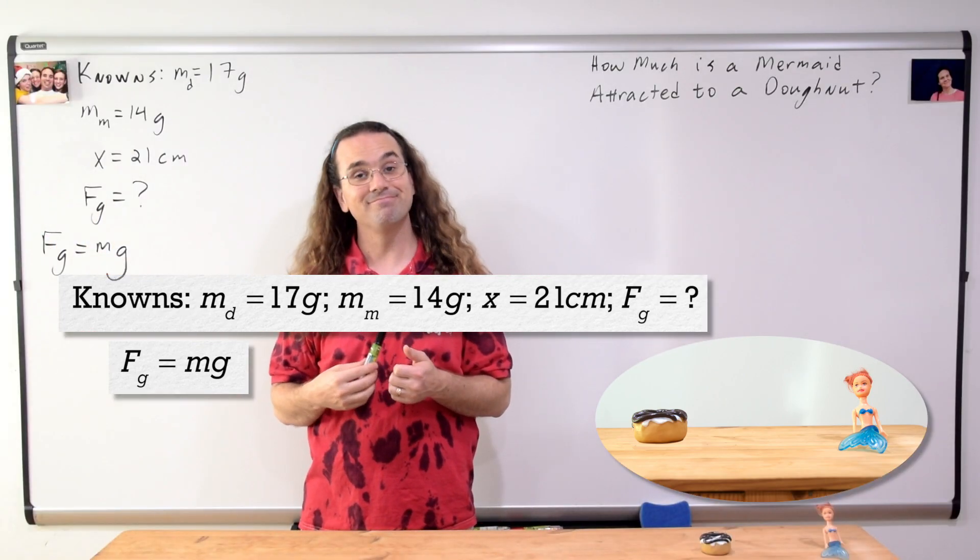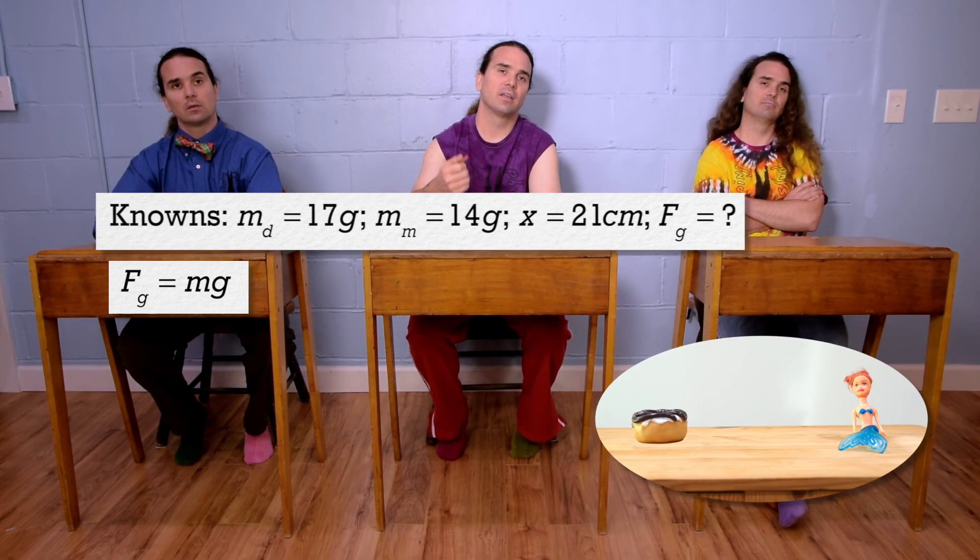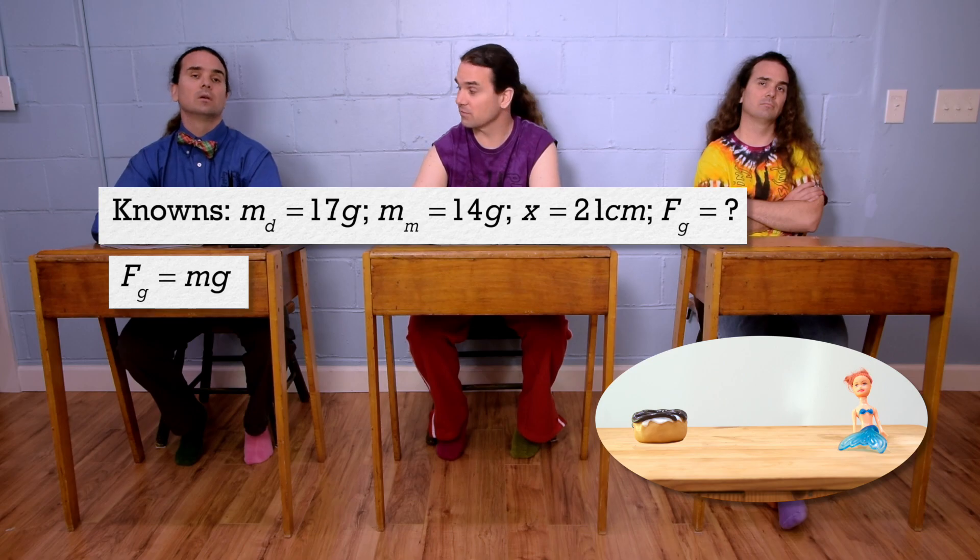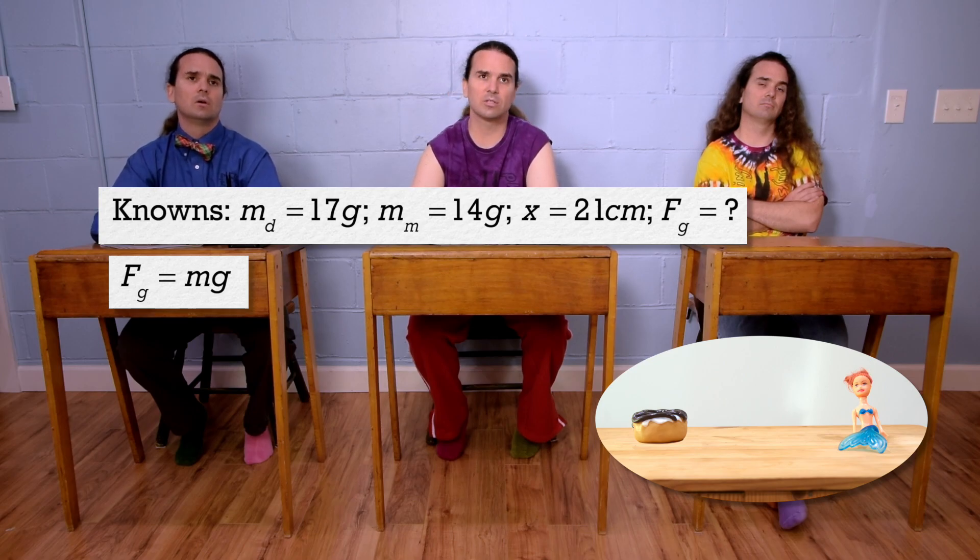Oh, that is the equation for the force of gravity between an object near the surface of the planet and the Earth, which is not the force of gravity we are solving for here.